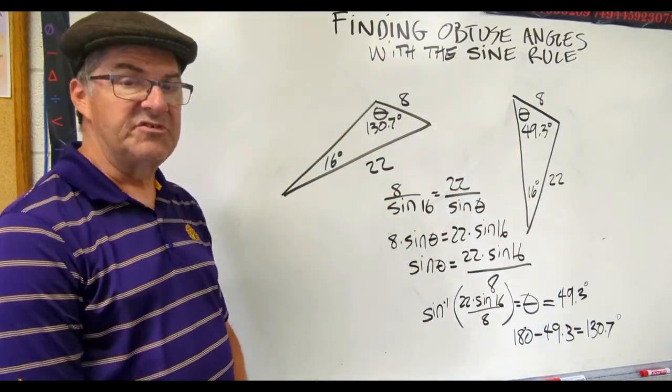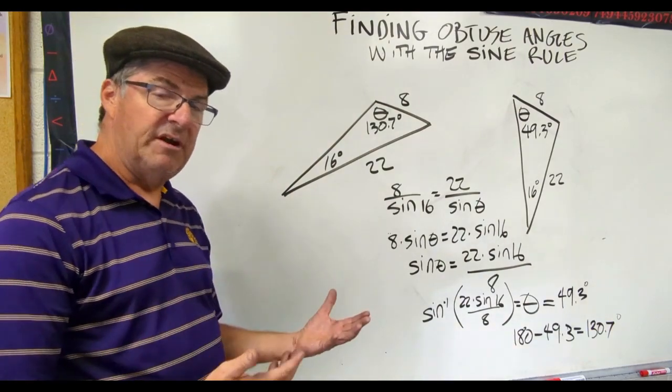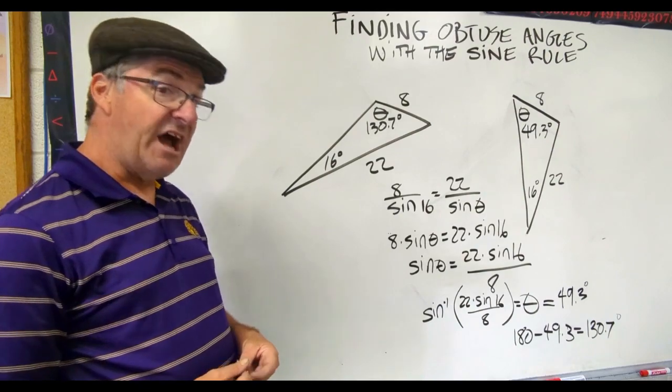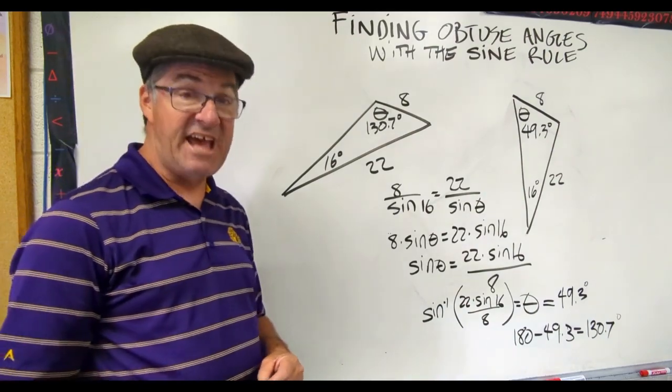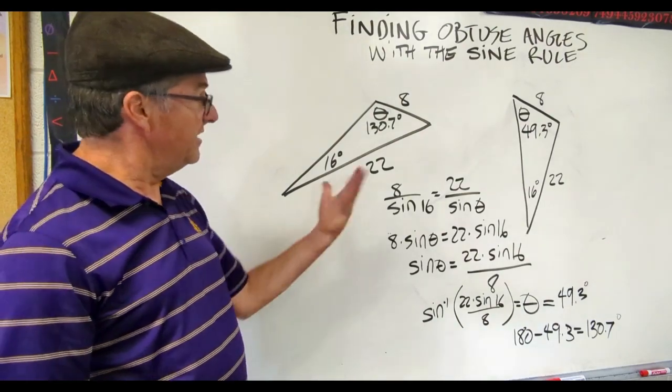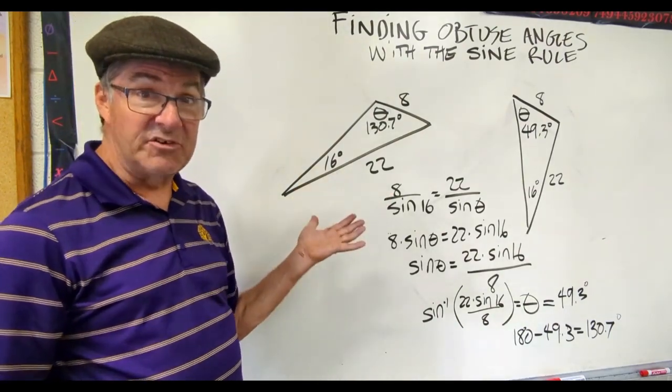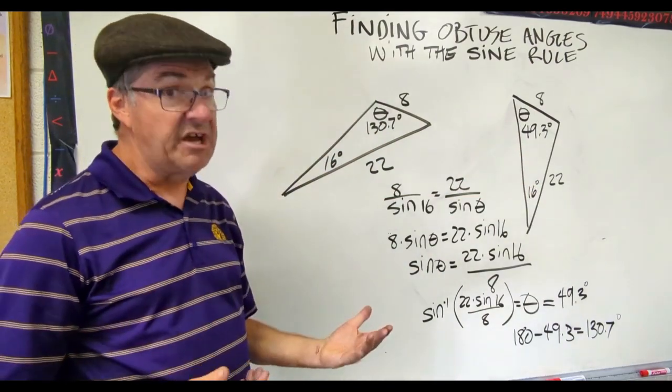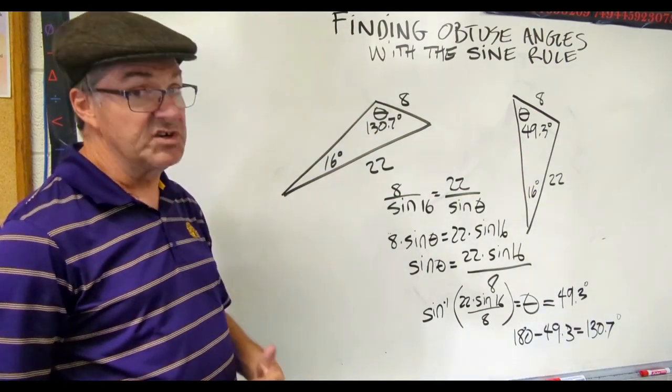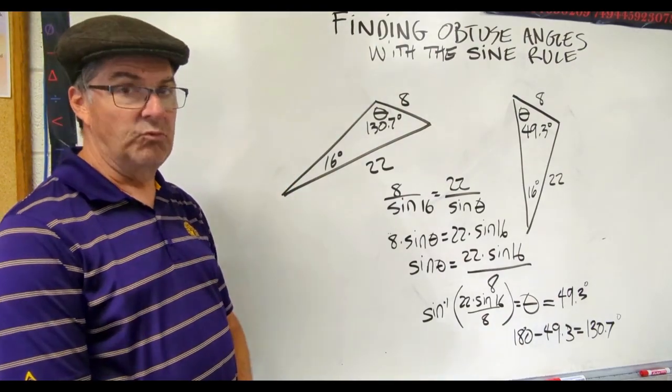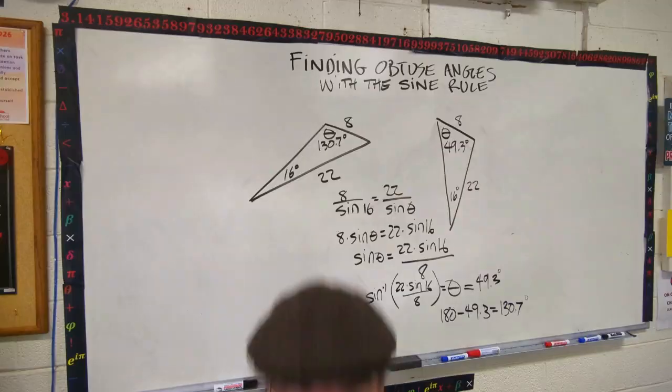Same math for both of those. So the thing to remember is that when you take the inverse sine to find an angle, your calculator will find the smallest angle that satisfies what you're doing. So in this case, there are two angles. There's two triangles that meet these conditions. So your calculator is just not going to give you the second one, just the first one. So that's why you have to do this when you're finding obtuse angles with the sine rule. Woohoo!